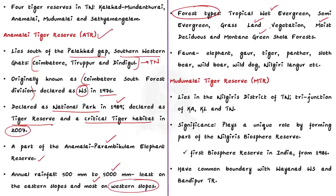When we are talking about animals, Elephant, Gaur, Tiger, Panther, Sloth Bear, Wild Boar, Wild Dog, and Nilgiri Langur are some of the animals found in Anamalai Tiger Reserve.